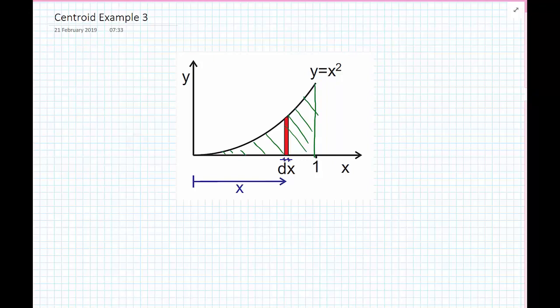For the differential element here, we can define the distance to the centroid of that differential element. So x tilde, the distance along the x-axis to the centroid, is equal to the coordinate x. And y tilde, because it's rectangular, will have this value here, which is y upon 2, where this value here is y.